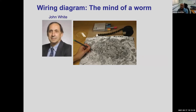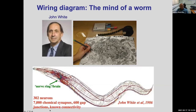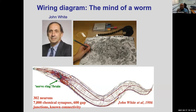The next breakthrough was made by John White, a computer science graduate student. Over almost 10 years he looked at thin sections by electron microscopy to map the connections exactly—what we are trying to do for the human brain. He figured out that 302 neurons are connected by 7,000 chemical synapses and 600 electrical synapses, with about 200 neurons in the head region, the so-called brain or nerve ring. Remarkably, the synaptic structure of C. elegans looks almost like the human synapse—the same electron-dense active zone and pre-filled synaptic vesicles.